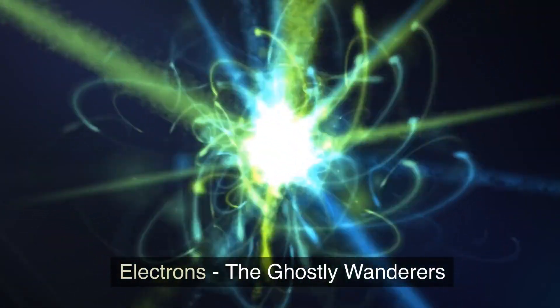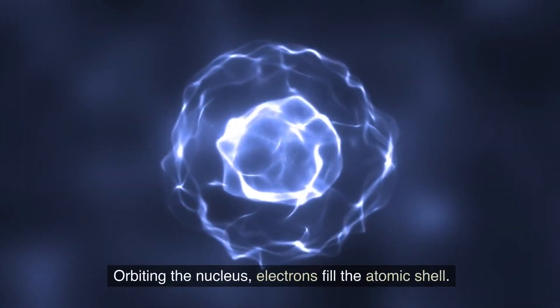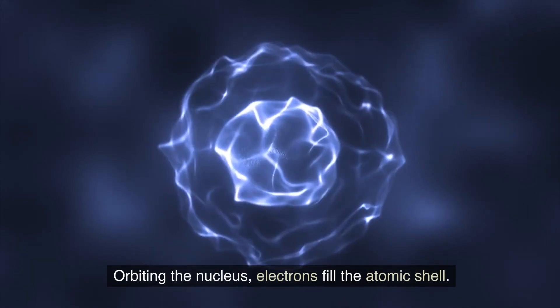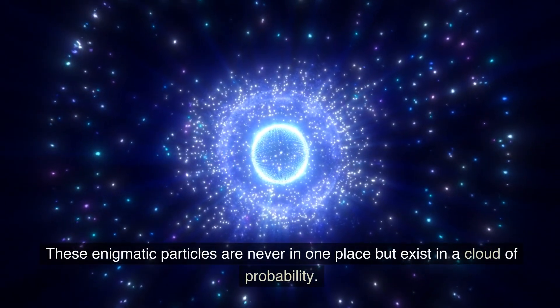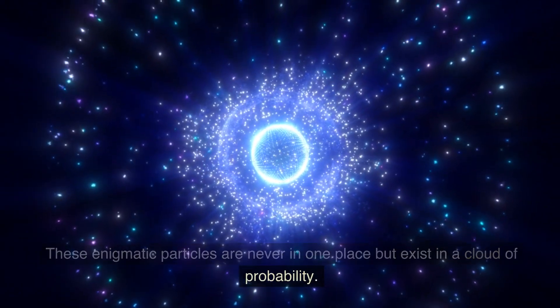Electrons, the ghostly wanderers. Orbiting the nucleus, electrons fill the atomic shell. These enigmatic particles are never in one place, but exist in a cloud of probability.